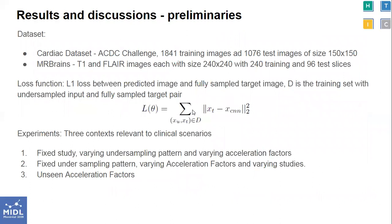We consider two datasets in our experiments: the cardiac ACDC segmentation challenge dataset and the MR-WIN T1 and FLAIR images. We use the L1 loss function for training and consider three contexts relevant to clinical scenarios.